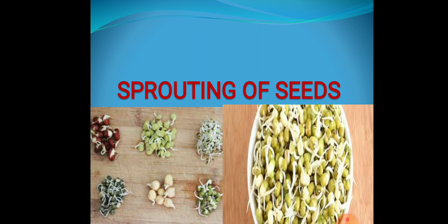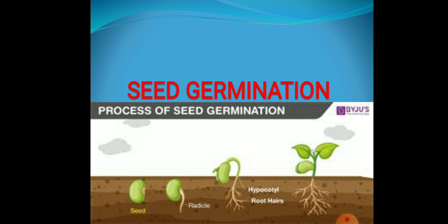Students, have you heard the word germination? What is the meaning of germination? When you grow a plant, you put the seed in the soil, and after some days a new plant emerges from the soil. This is due to the germination of the seed. Germination is a process by which a new plant grows from a seed. Seeds need water, oxygen and proper temperature in order to germinate.